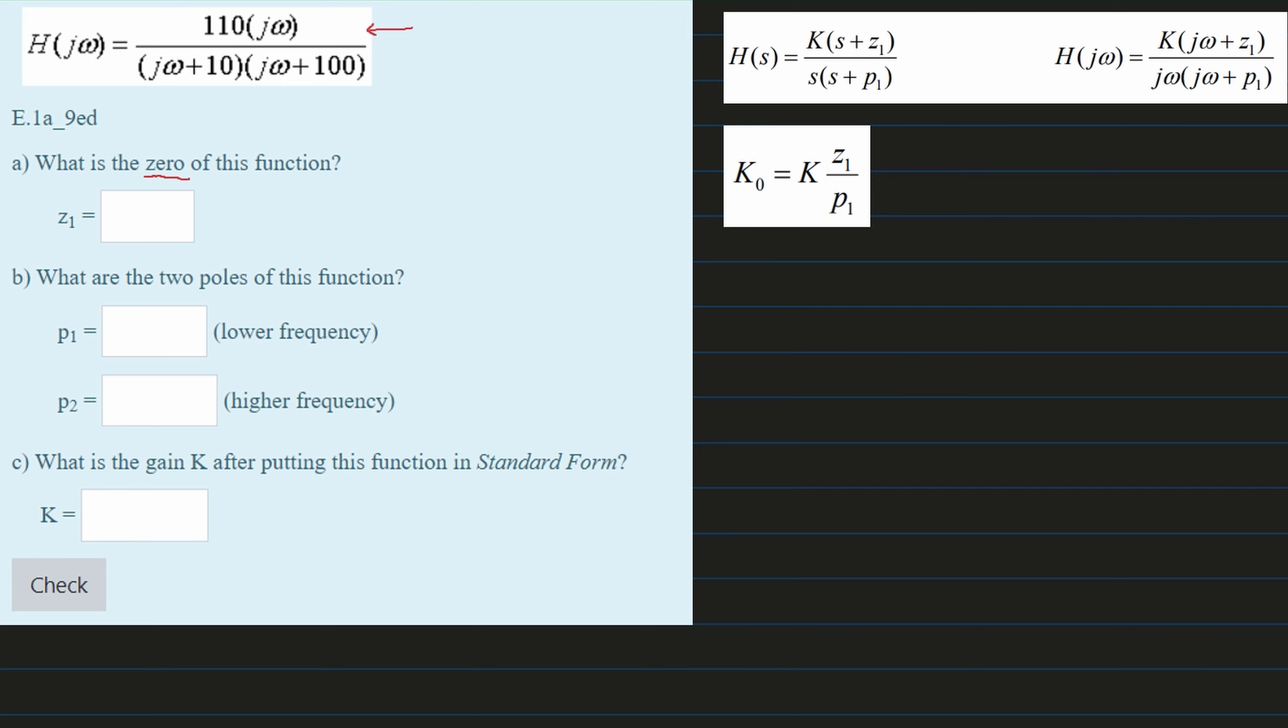Our b is what are the two poles of this function. And the two poles here are p1 and p2. We have a lower frequency and we have a higher frequency.